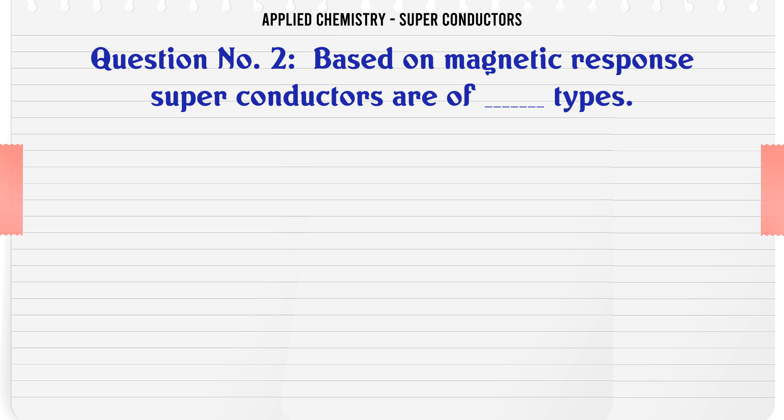Based on magnetic response, superconductors are of types: A 1, B 2, C 3, D 4. The correct answer is 2.